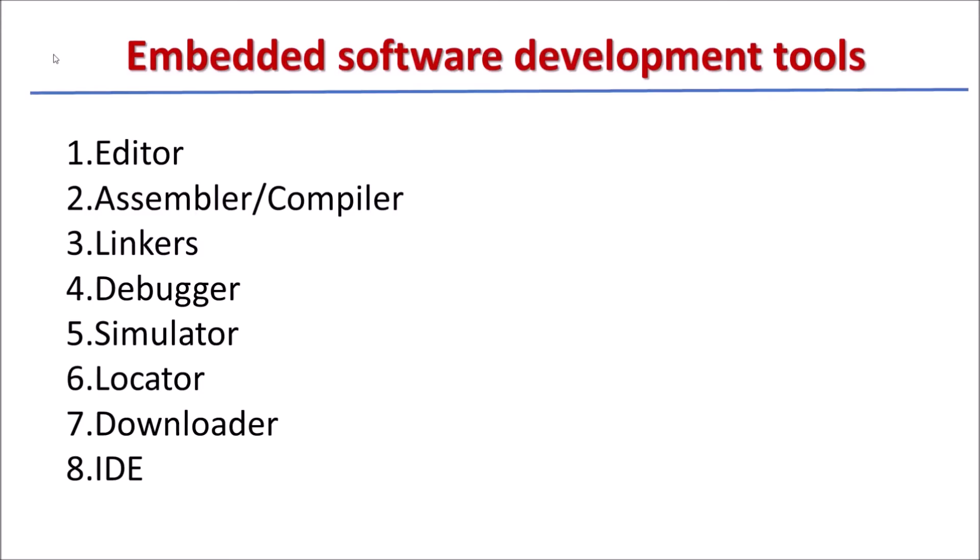These are the different software tools generally used for development of embedded systems: editor, assembler or compiler, linkers, debuggers, simulator, locator, downloader that is programmer, and IDE that is integrated development environment. We'll discuss the software tools one by one.